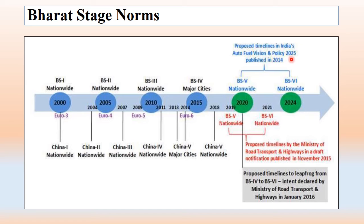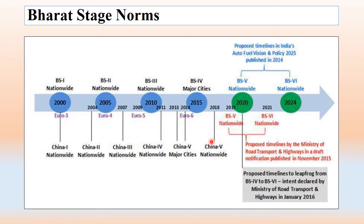This is the proposed timeline in India's Auto Fuel Vision and Policy 2025, published in 2014. India skipped Bharat Stage 5 and directly implemented Bharat Stage 6 in 2020. Comparatively, China implemented China 1 nationwide, China 2 ahead of us, China 3 in 2011, China 4 in 2014, China 5 in 2018, and China 6 thereafter — China is more advanced than India in emission norms.